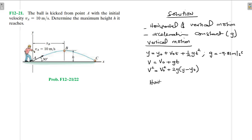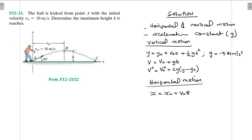For horizontal motion, we assume the velocity in the horizontal direction is constant and there is no acceleration — acceleration equals zero. So x = x₀ + v₀·t, with no additional acceleration term. The velocity v_final equals v₀, and v² equals v₀². The acceleration here is zero and velocity is assumed constant from A to C.